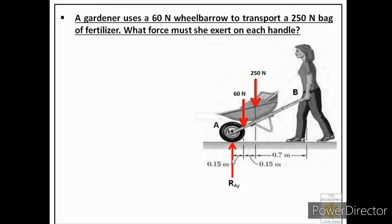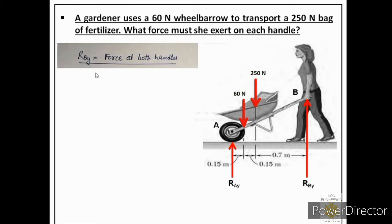At the wheel we show one reaction normal to the surface, labeled as reaction at A in the Y direction. At the handles we label the reaction as RBY in the Y direction, representing both handles combined. Since the question asks for the force on each handle, when we find RBY we must divide it by 2 to get the answer per handle.